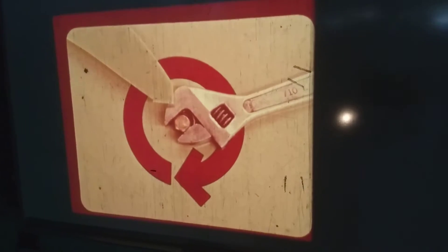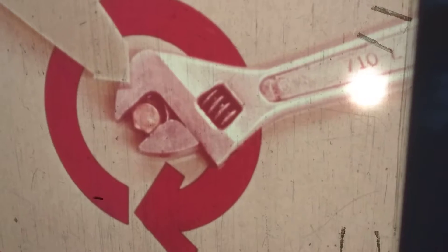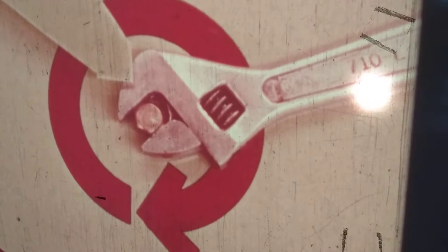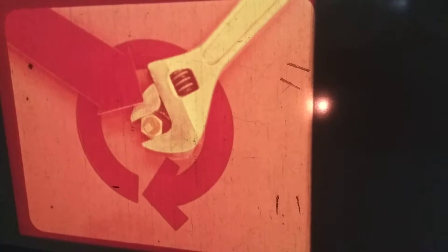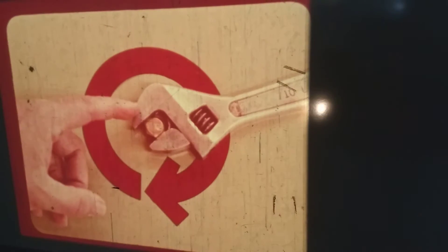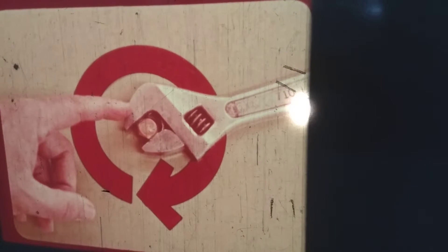And when you use it, hold it so the torque, the turning force, is applied to the solid side of the wrench. Don't hold it so the force is on the adjustable side. This part of the wrench is much stronger than the adjustable part of the jaws.